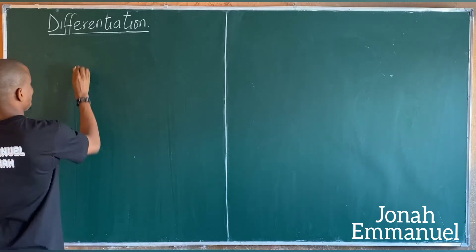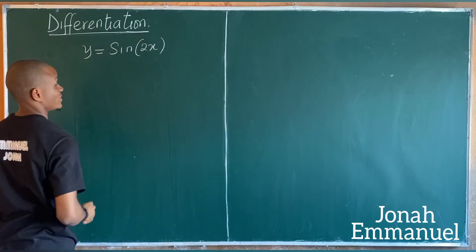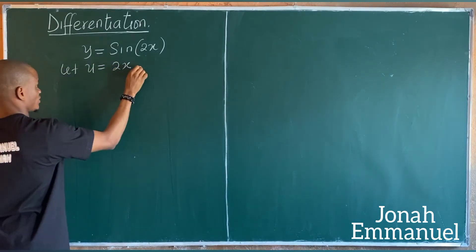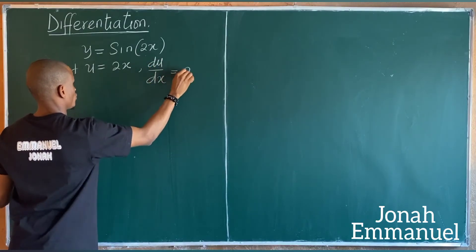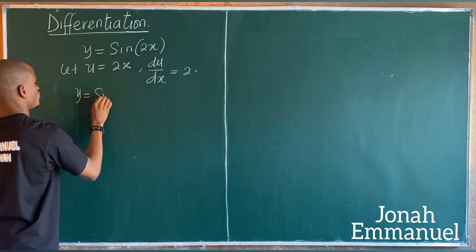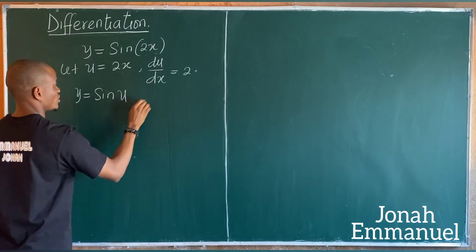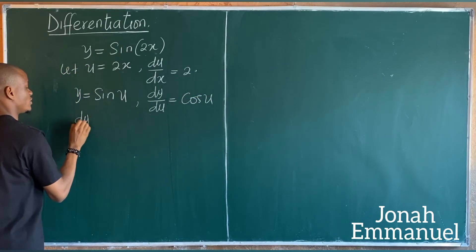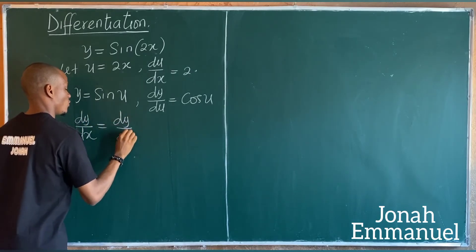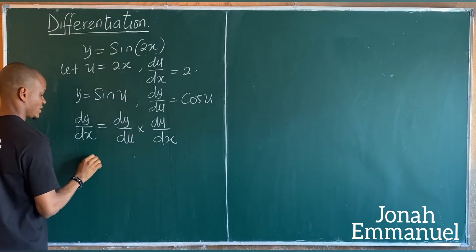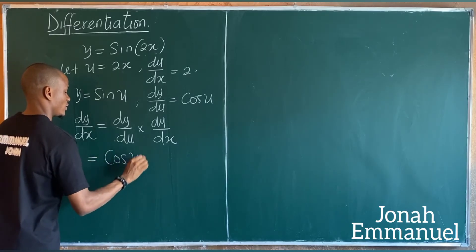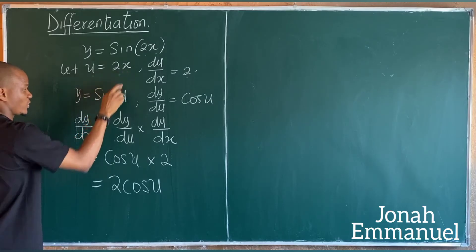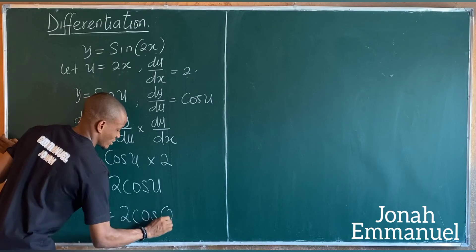Before the last example, let's consider the shortcut. If y equals sin 2x, let u equal 2x so du/dx equals 2, and y equals sin u so dy/du equals cos u. Using chain rule: dy/dx equals cos u times 2, which gives 2 cos 2x.